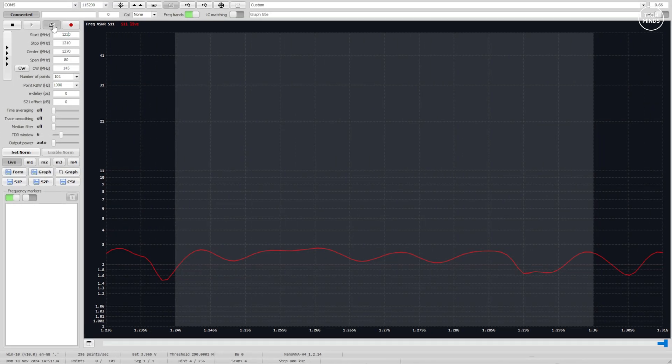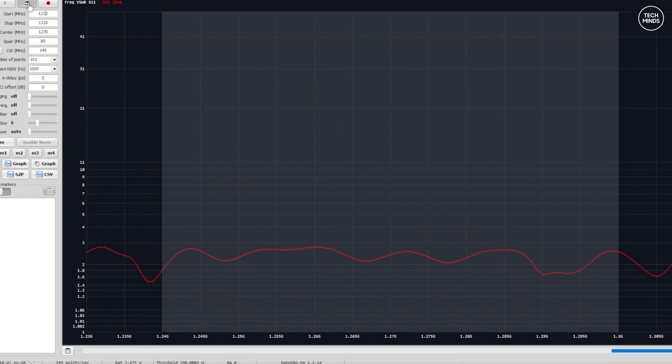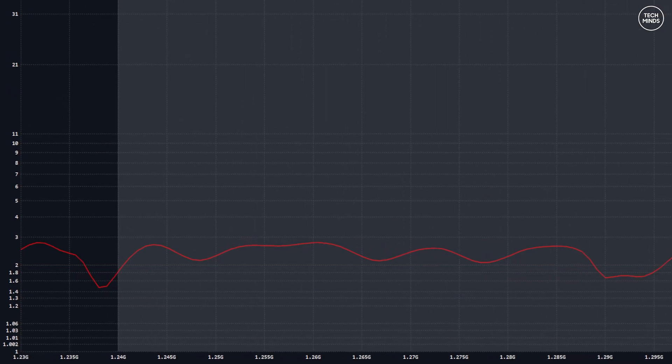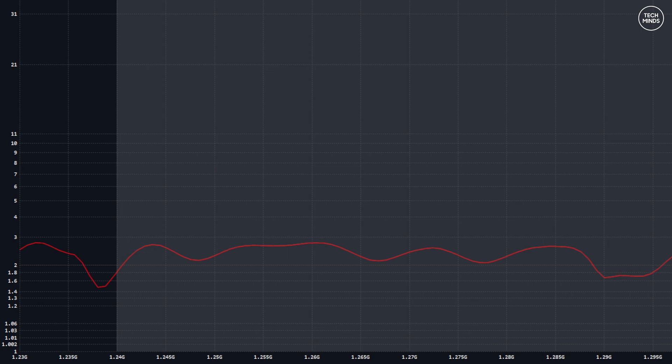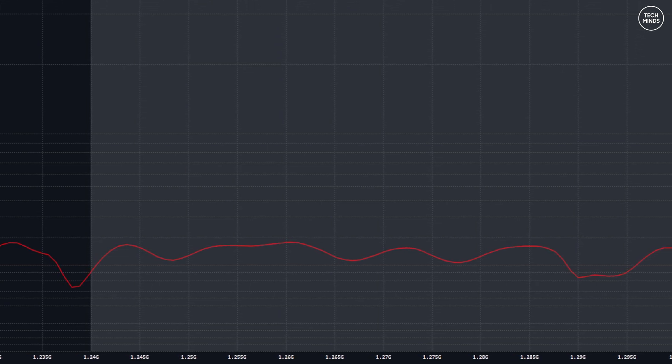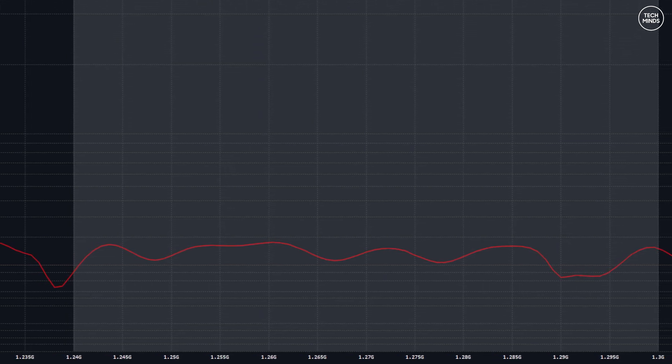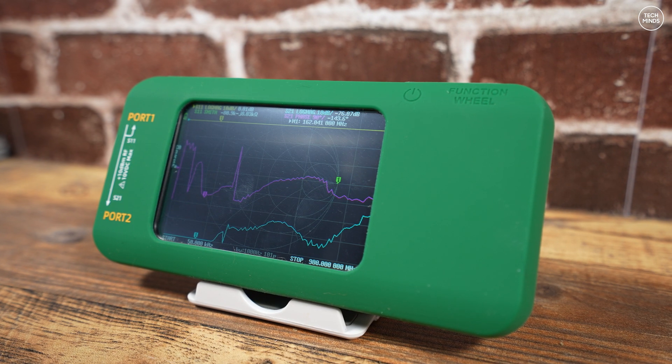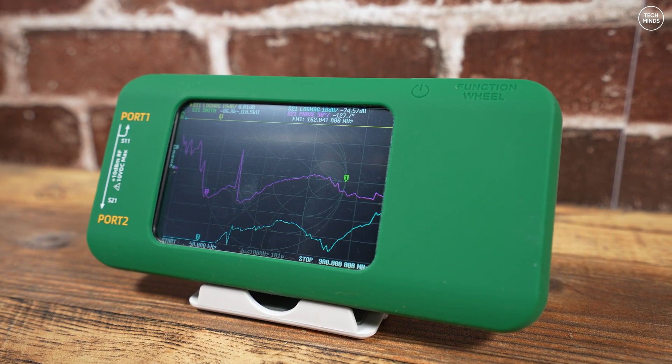This is the 23 centimeter band and according to this measurement using this software, which by the way was the same as the device itself, it shows that the SWR is around two across the entire band. I had thought whether the antenna has a fault or whether there's actually an issue with this VNA, but after checking with another trusted analyzer the measurement was exactly the same for all the bands tested. So it looks like I'll have to get another antenna to replace this one.